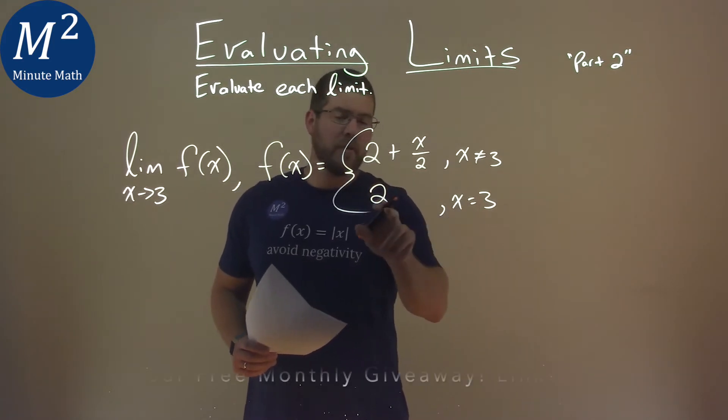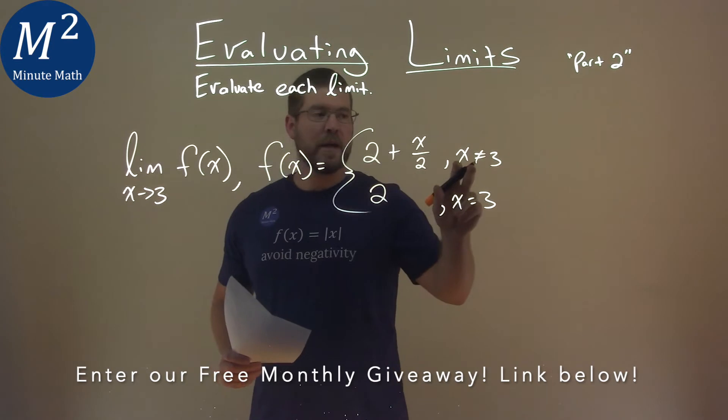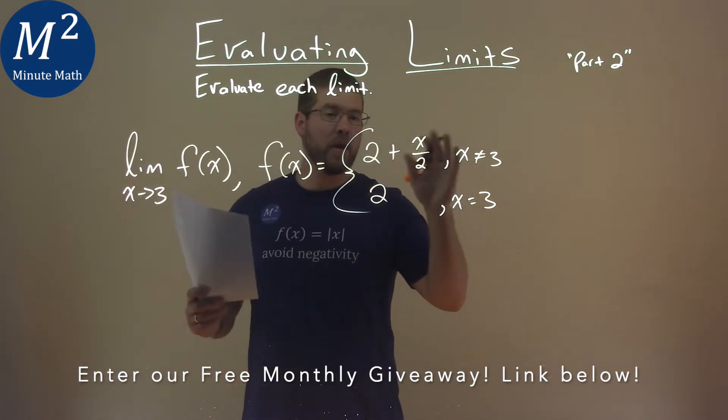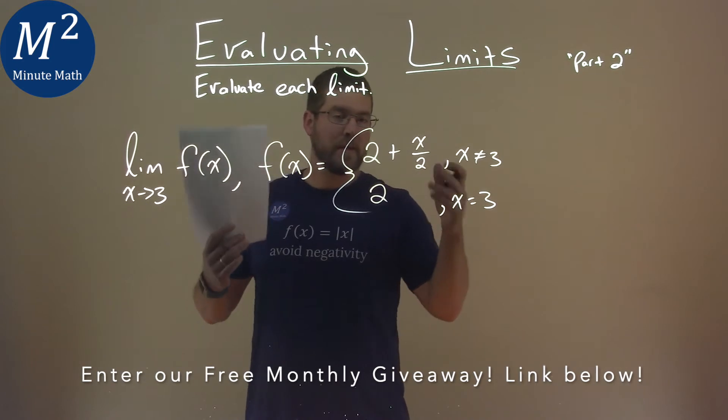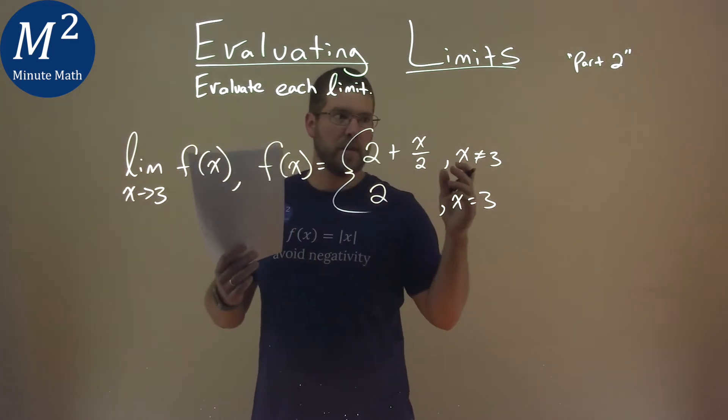Where it's equal to 3 is right here at 2, but when it's approaching 3, we actually have to use the top equation, because any other x value approaching when x equals 3, we use the top equation that's approaching from the left and right.